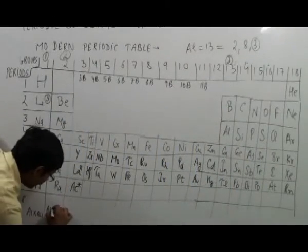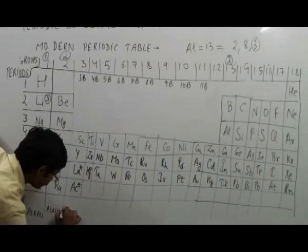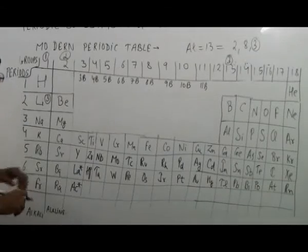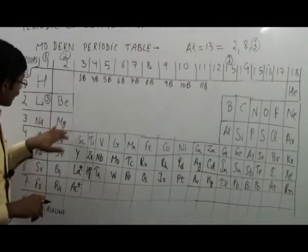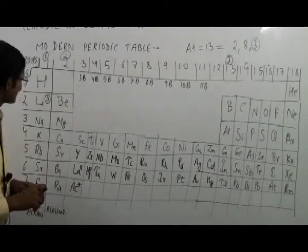The second group, which was known as Alkaline group. To remember this group, we can use as 'Beta Maange Car Scooter Bab Rhoe.'